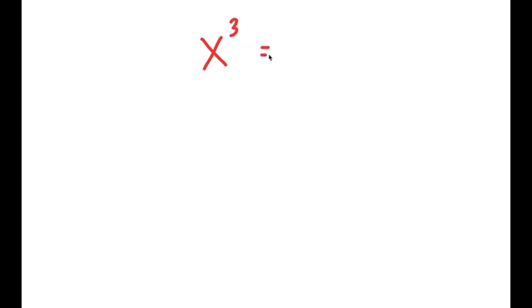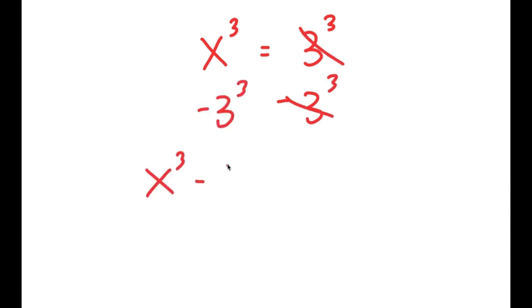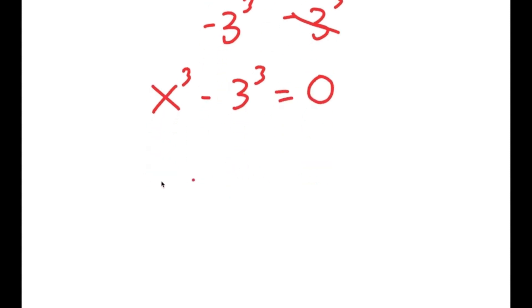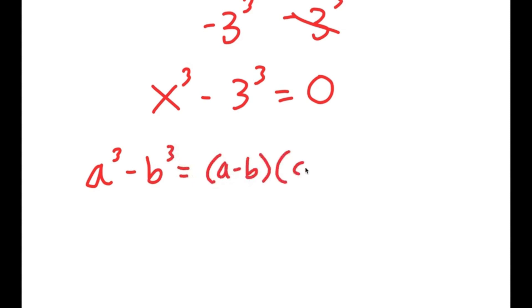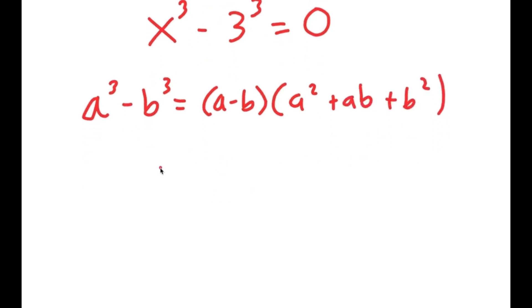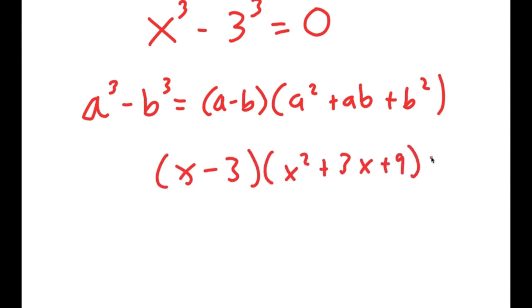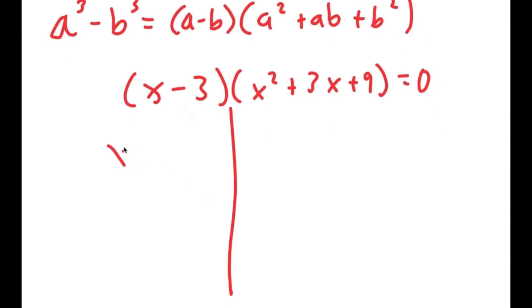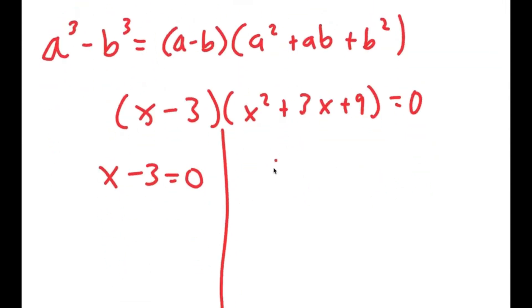Now I'm solving the equation x to the power of 3 is equal to 3 to the power of 3. To solve this, I'm going to first subtract 3 to the power of 3 from both sides, so I get x to the power of 3 minus 3 to the power of 3 equals 0. Using the difference of cubes formula, a³ minus b³ equals a minus b times a squared plus ab plus b squared, this turns into x minus 3 times x squared plus 3x plus 9 is equal to 0. So now I get two equations: x minus 3 equals 0, and x squared plus 3x plus 9 equals 0.